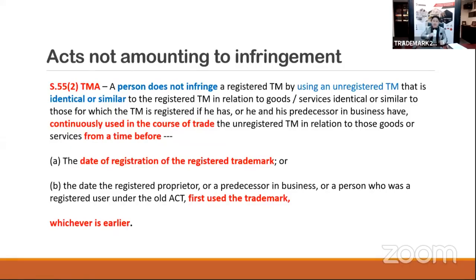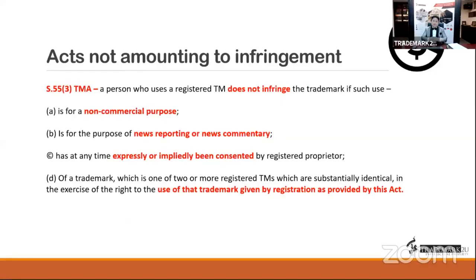Section 55(2)(b) also covers the date of first use by the registered proprietor or a registered user under the old Act. Both (a) and (b) relate to honest concurrent use and common law first-use rights, whichever is earlier. If you have been using the trademark for such a long time before somebody registered it, and you can prove that, you are not subject to trademark infringement under this provision.